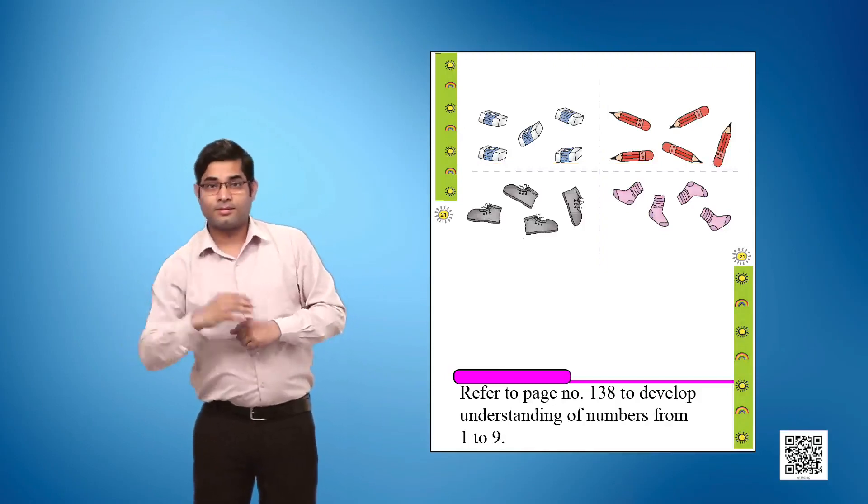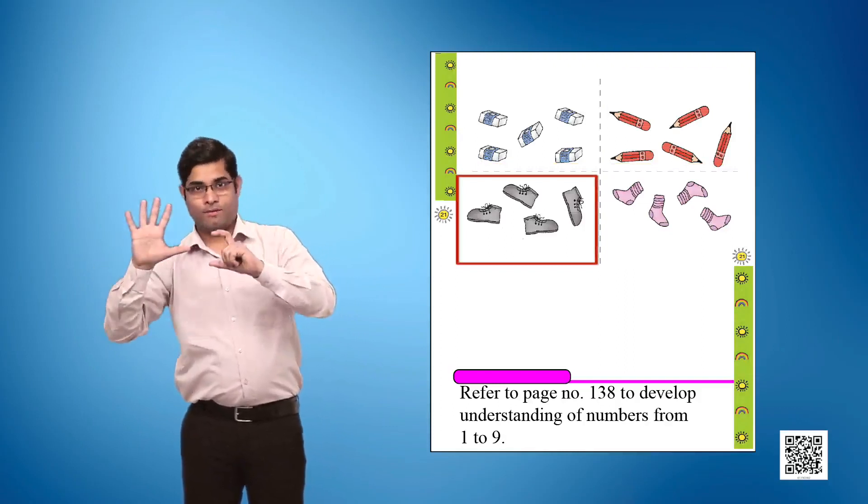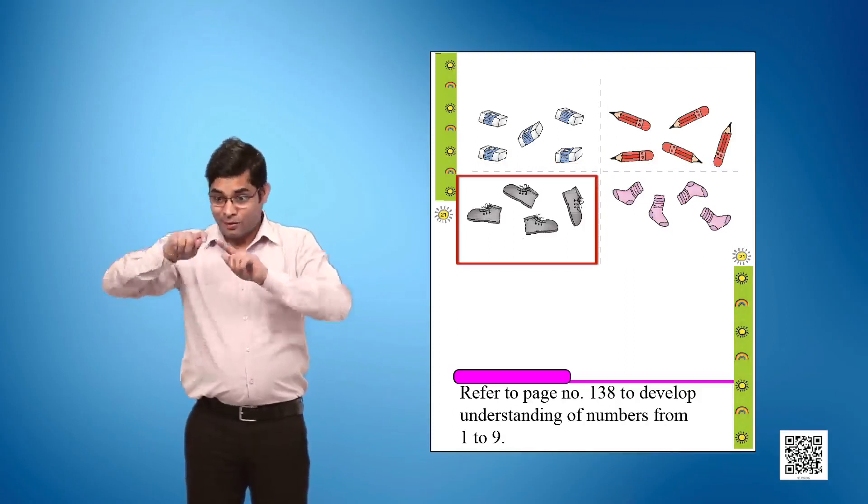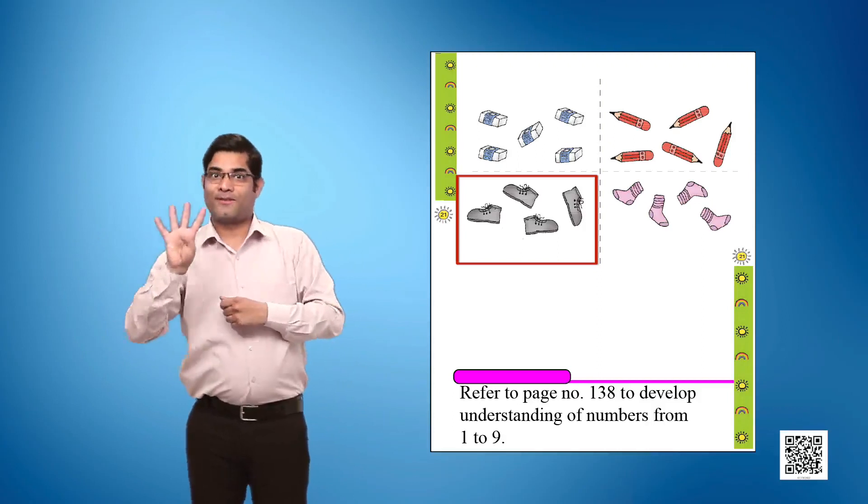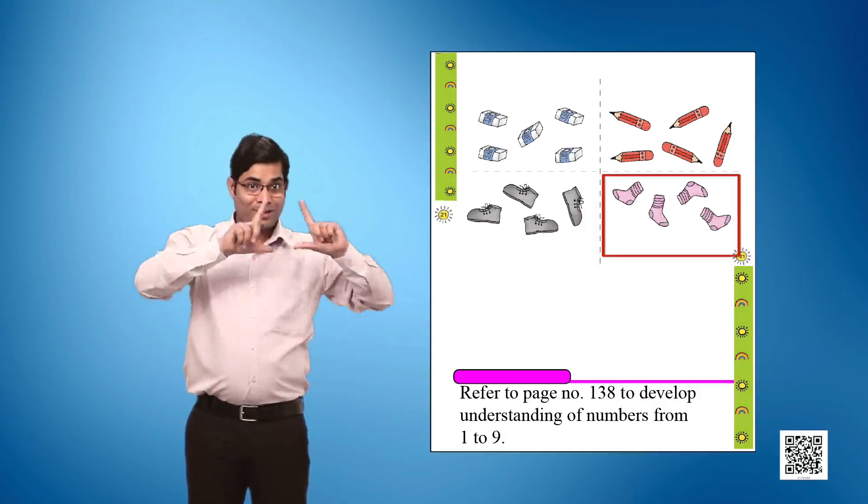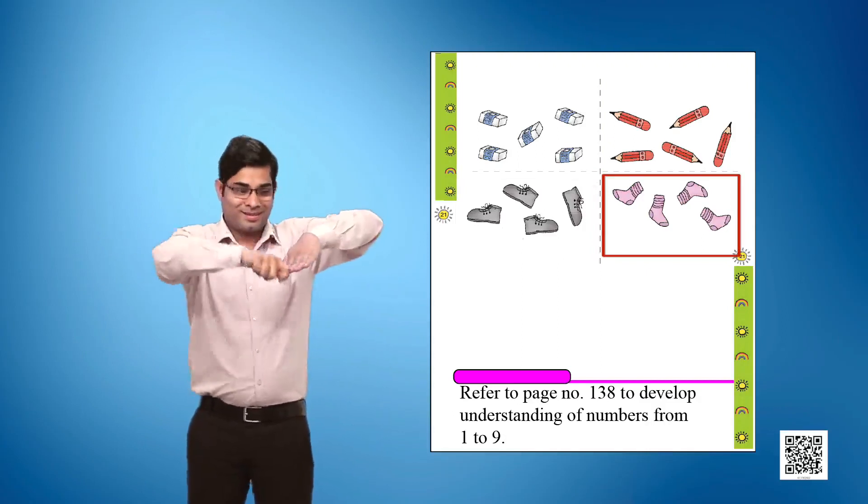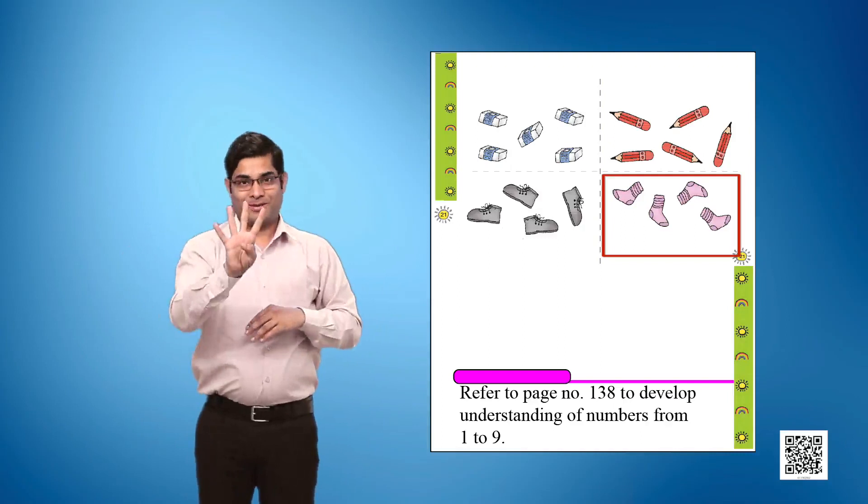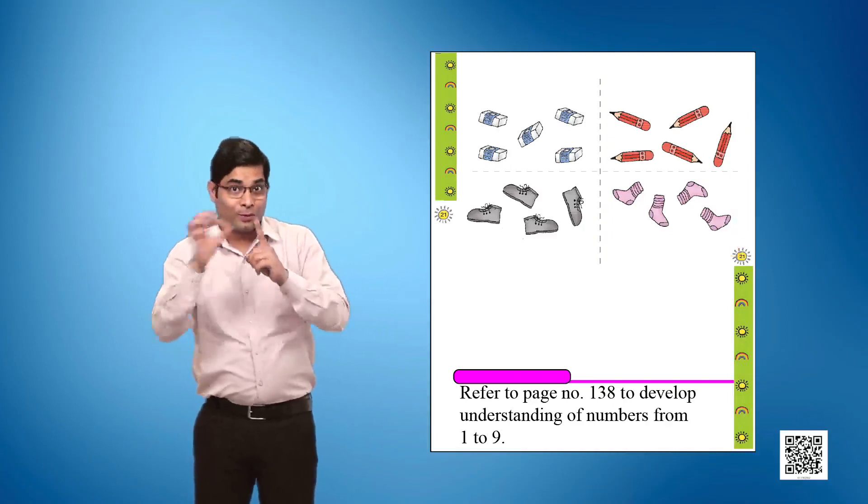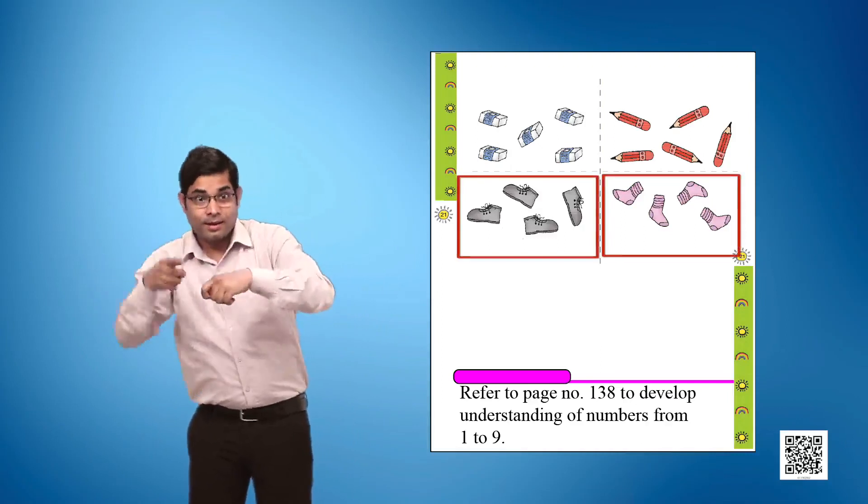Column 1, Picture 5 shows 4 shoes. Column 2, Picture 5 shows 4 socks. Activity 4: Match the shoes with the socks.